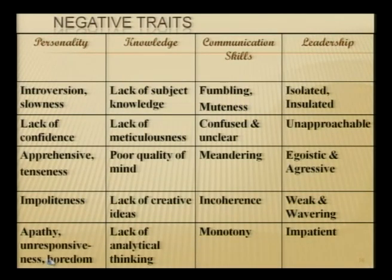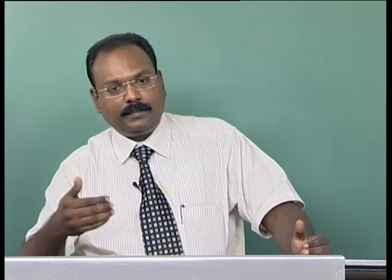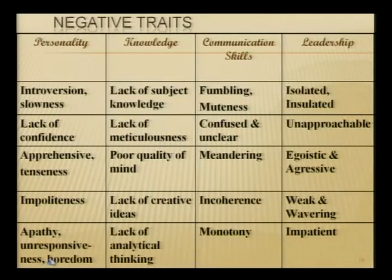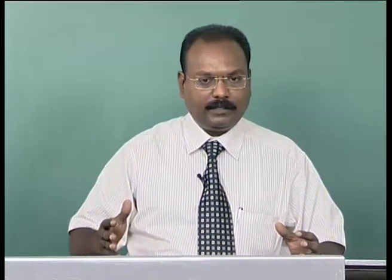Under communication skills, negative traits include: fumbling — not saying things clearly, stopping mid-sentence; and muteness — not saying anything at all, remaining speechless. Being confused and unclear with lack of clarity in thoughts is also negative. The tendency to meander — digressing, telling stories or giving illustrations with no relation to the central thought — is another negative trait. Incoherence and monotony are also problematic — if you are not able to vary your tone or give proper emphasis, the speech becomes monotonous and boring.